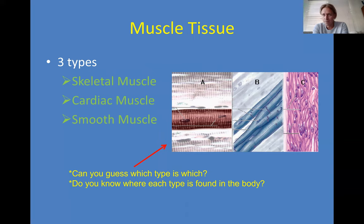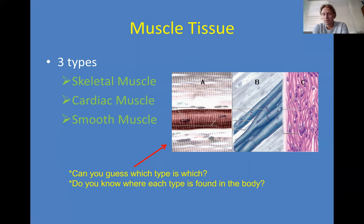If you remember the last video, I talked about two other types of tissue: epithelium and connective tissue. In this one, we're going to cover the other two types, which are muscle and nerve tissue. With muscle tissue, there are three major types: skeletal muscle, cardiac muscle, and smooth muscle. You find these in different locations of the body.